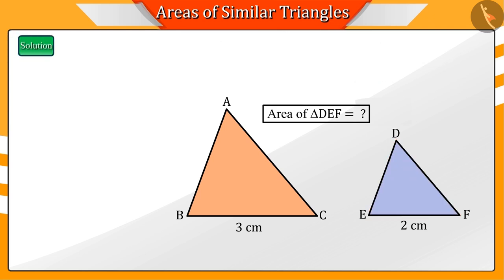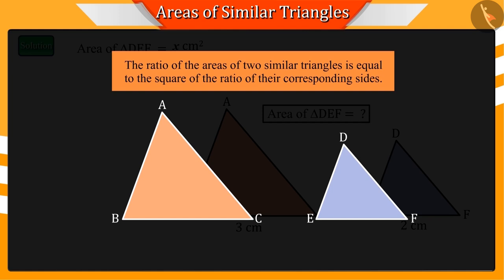Let's solve this together. First, let's assume that the area of triangle DEF is x square centimeters. Now, we know that the ratio of the areas of two similar triangles is equal to the square of the ratio of the corresponding sides.